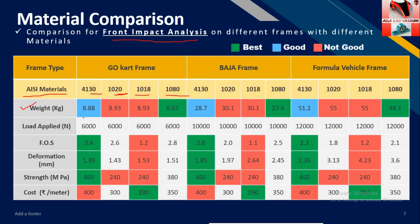Let's start from weight. Weight depends on two factors: first, density of material; second, design of our roll cage. So we can control the weight of our roll cage either by choosing a material with low density or by changing its design. You can see in the table that material in green has less weight, material in blue has moderate weight, and material in red has more weight. I have told you how we can decide and calculate load, and if you still have any doubt regarding it, comment in the comment box.